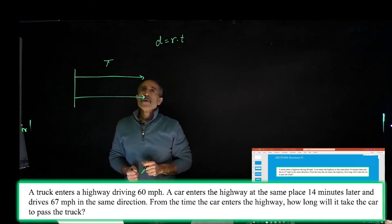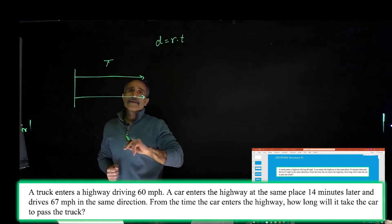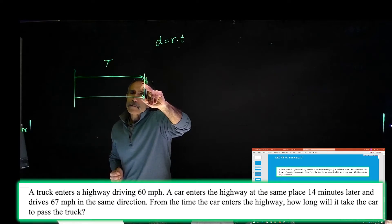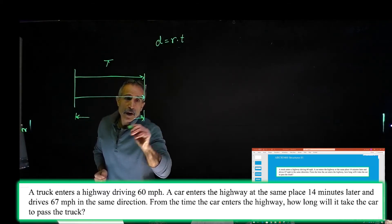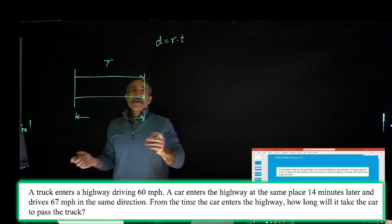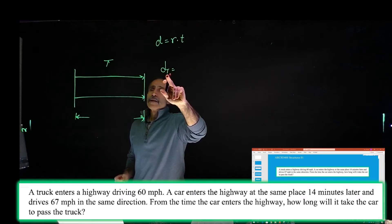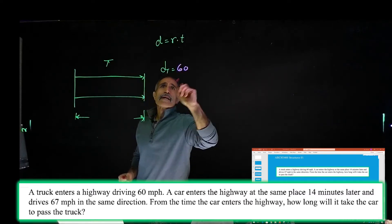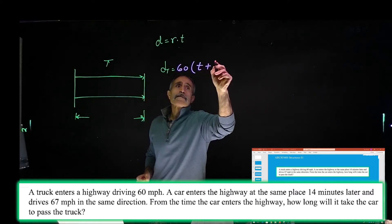So there is a formula that we have. It says D = RT, distance equals rate times time. For the truck, the time for the truck has extra 14 minutes. But they both travel the same distance when the car passes the truck. So distance of the truck, DT, is equal, it's going 60 miles an hour, time the truck driving at T plus 14 minutes. We want 14 minutes in terms of hours, so 14 divided by 60.